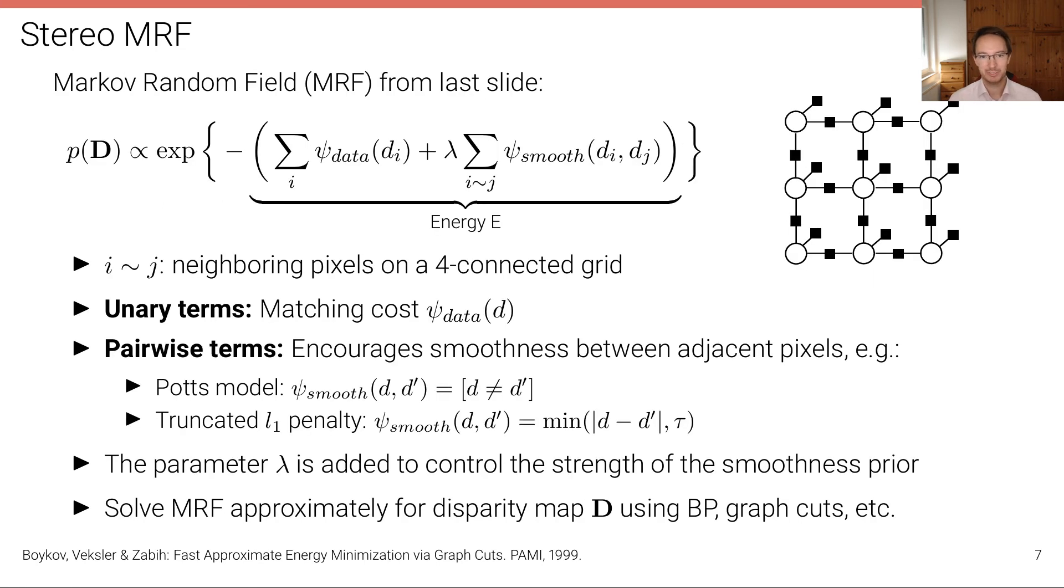This is the equation from the previous slide. Just to recap, we have i tilde j denoting neighboring pixels on a four-connected grid. And we have unary terms, which are the matching cost. And by formulating this as an energy formulation, we can directly take, for instance, the sum of square distance here as the matching cost, where lower is better. And we have pairwise terms here that encourage smoothness between adjacent pixels.